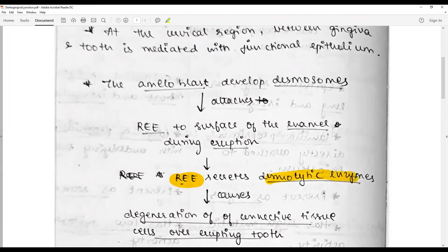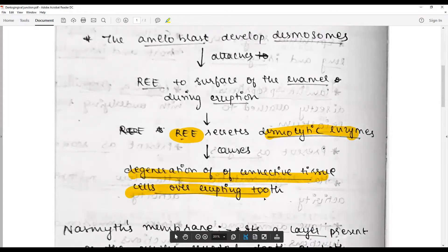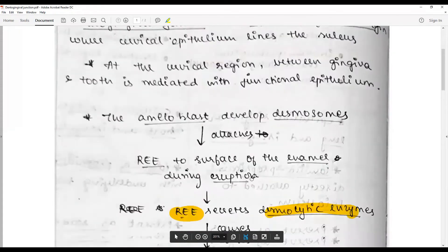secretes desmolytic enzymes which cause the degeneration of connective tissue cells over the erupting tooth, leading to bloodless eruptions.